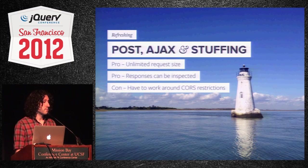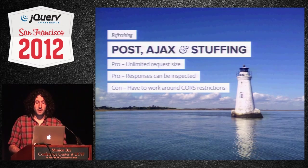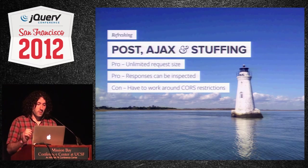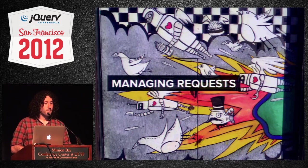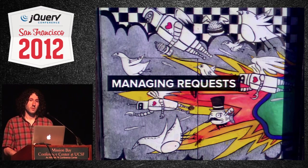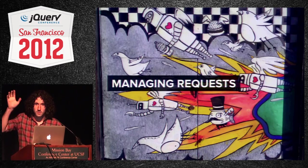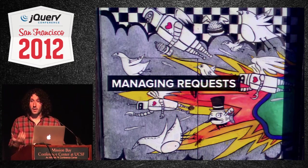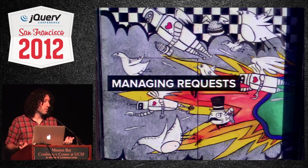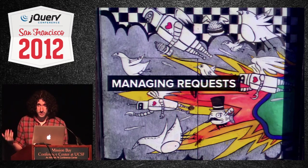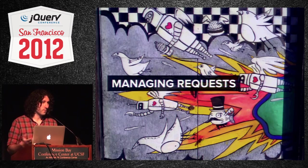That works — we do have to work around CORS restrictions, but it's pretty much the best trade-off. The cool thing is it means we can inspect the responses and do a lot of interesting things with them. Now: managing requests. We figured out how we're going to refresh the page, but how do we make it so the user doesn't constantly see a white refreshing screen? That would be terrible — you'd just want a button.